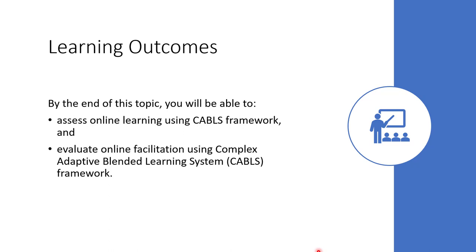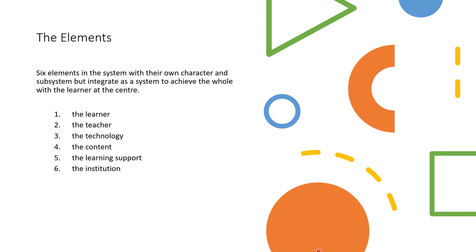What does the framework say? The framework has six elements and these six elements stand as a subsystem that come together to form a system with the learner at the center. What are these elements? We have the learner, the teacher, technology, content, learning support, and the institution.